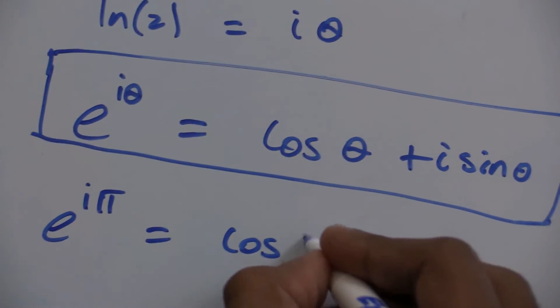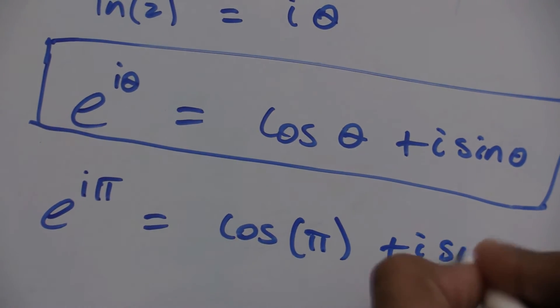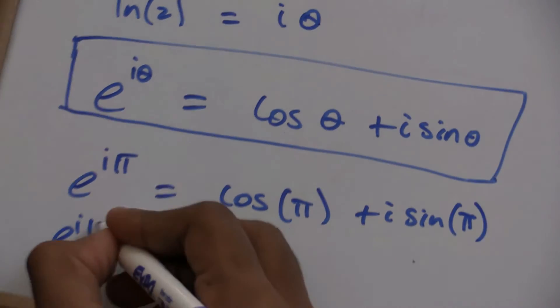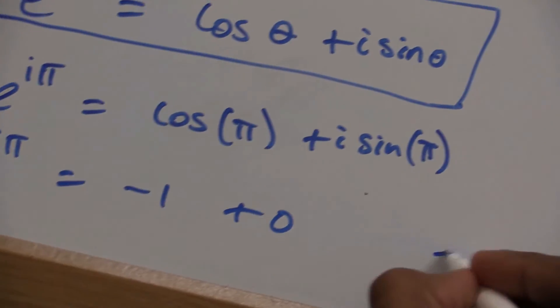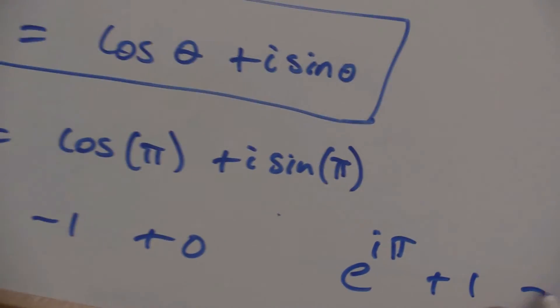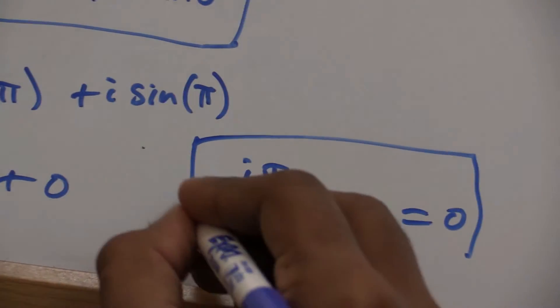When I substitute θ equals π, you see how I get Euler's identity. e to the iπ equals cosine of π, which is negative 1, and sine of π is 0. This can be rewritten as e to the iπ plus 1 equals 0, which is Euler's identity.